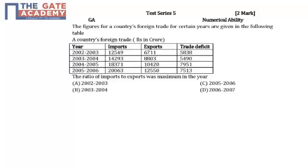Hello students. The following question is from Test Series 5, subject General Attitude, chapter Numerical Ability. The question states that figures for the country's foreign trade for certain years are given in the following table. All entries are in terms of rupees in crores. The table has three columns: years, imports, and exports, along with trade deficit.